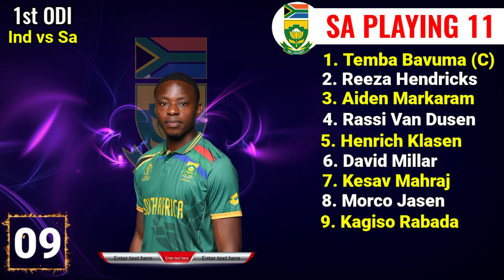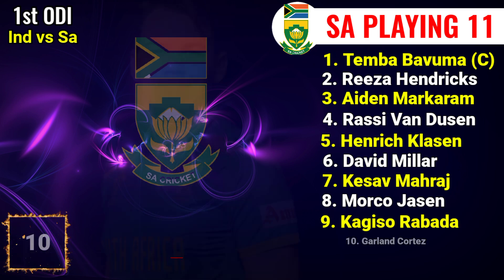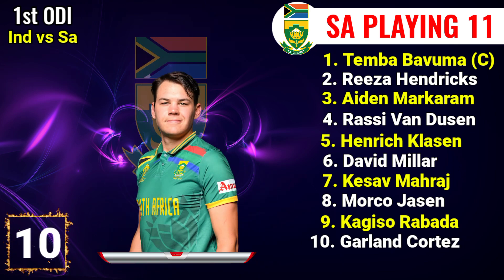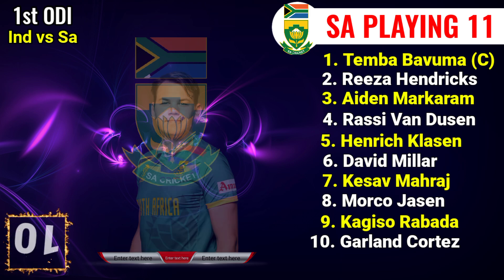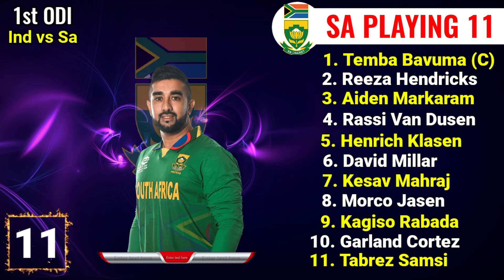No.9 Kagiso Rabada, right-hand fast bowler. No.10 Gerald Coetzee, right-hand fast bowler. No.11 Tabraiz Shamsi, right-hand spinner.